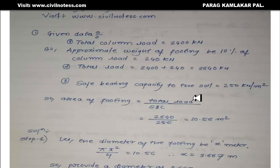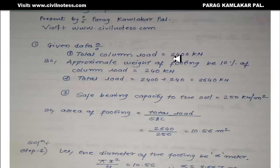I calculate the approximate weight of the footing — if it is square footing I take it as 5% of the column load, if it is circular footing I take it as 10% of the column load. The column load here is already a factored load. If in your numerical it is a working load or service load, you first need to multiply by 1.5 to get the factored load before taking the approximate weight.